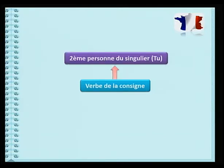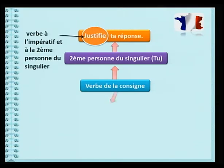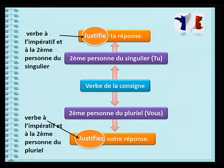Tu vois, la plupart des verbes de consigne sont à l'impératif. C'est un temps verbal que tu as appris dans une autre vidéo. Parfois, c'est écrit à la deuxième personne du singulier, comme pour s'adresser à un «tu»: Justifie ta réponse. D'autres fois, c'est écrit à la deuxième personne du pluriel, comme pour s'adresser à un «vous»: Justifie votre réponse. Mais tu verras que dans ton manuel, la plupart des consignes est à la deuxième personne du singulier, parce que les instructions te sont adressées.